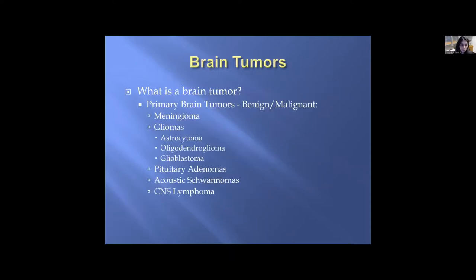What is a brain tumor? Primary brain tumors consist of both benign and malignant tumors: meningiomas, gliomas — which can be broken down into astrocytoma, oligodendroglioma, and glioblastoma — and then there are pituitary adenomas, acoustic schwannomas, CNS lymphomas, to name a few.